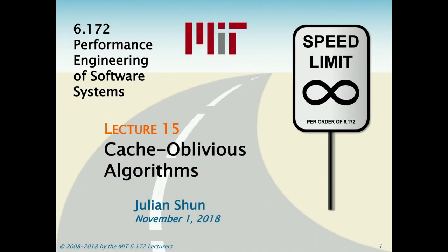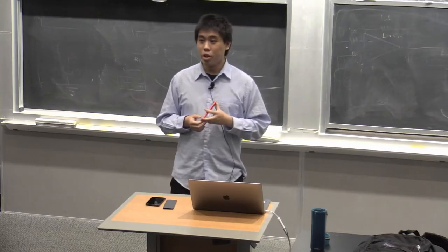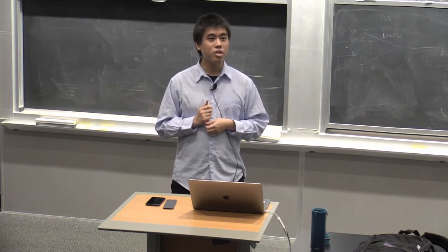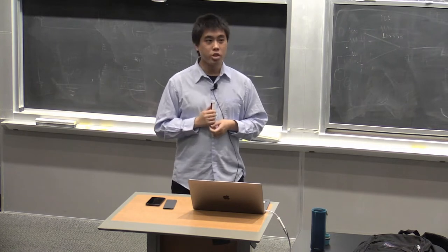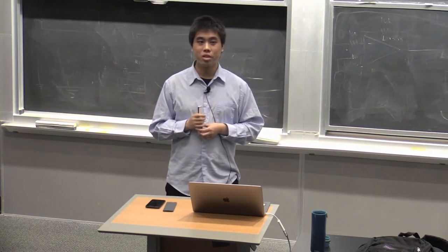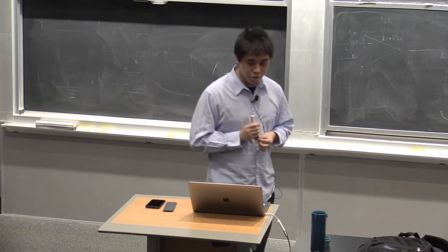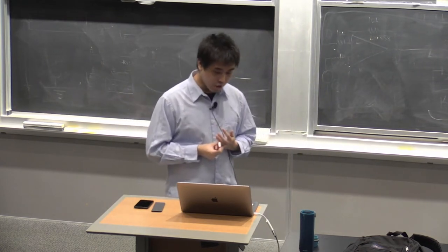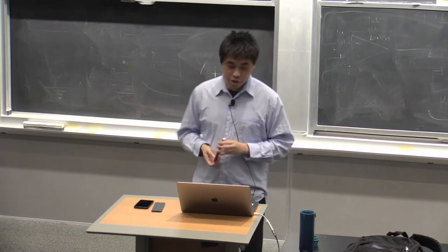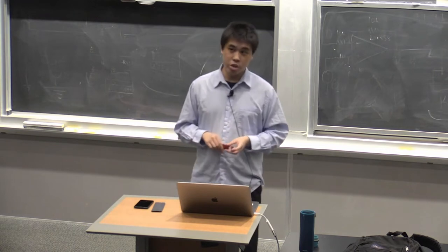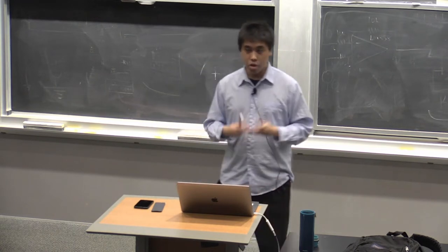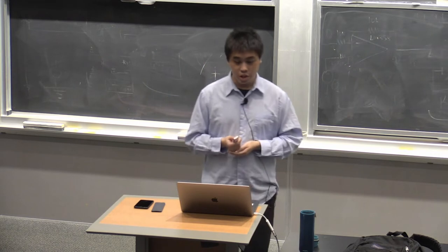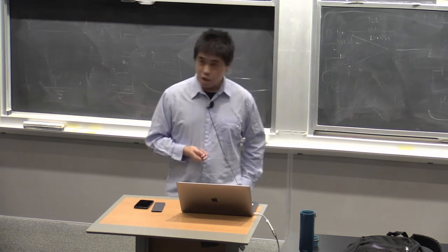Today we're going to talk about cache-oblivious algorithms. A cache-oblivious algorithm is oblivious to cache size — it automatically tunes for the cache size on your machine and achieves good cache efficiency. The code doesn't need to have any knowledge of the cache parameters of your machine. In contrast, a cache-aware algorithm would actually know the parameters of the cache sizes and put those sizes directly in the code.